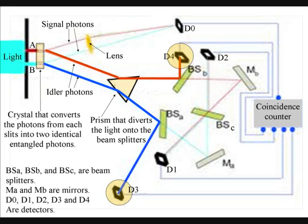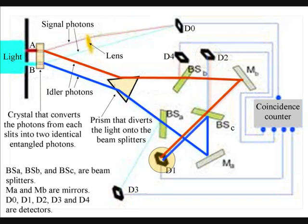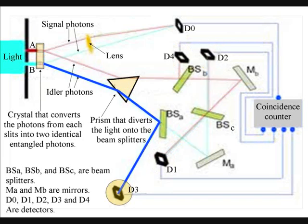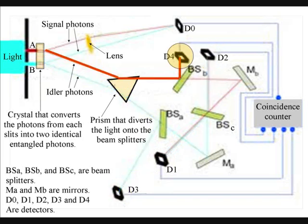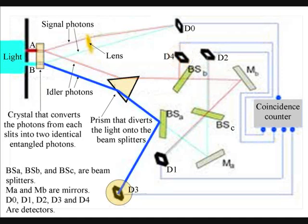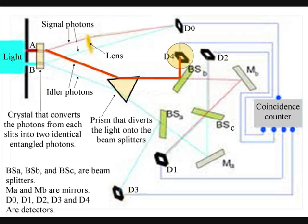Because of the way the beam splitters are arranged, light can be detected by detectors labelled D1, D2, D3 and D4. Note that if it is recorded at detector D3, then it can only have come from slit B. If it is recorded at detector D4, it can only have come from slit A.